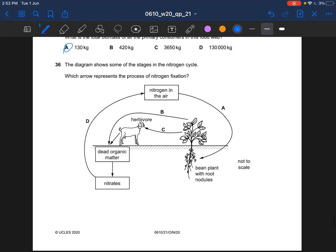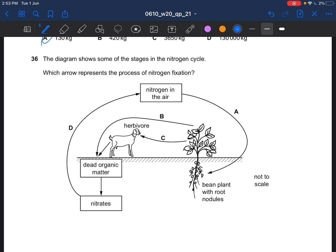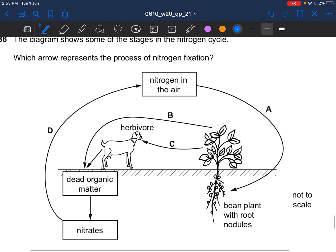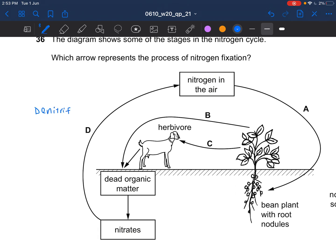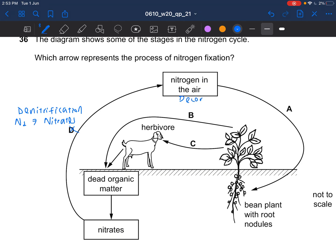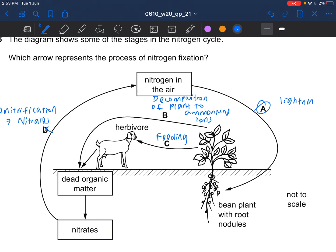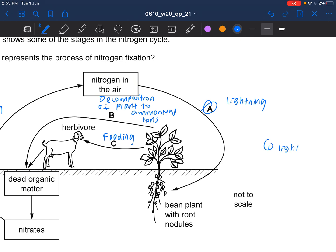Next question. The diagram shows some of the stages in the nitrogen cycle. Which arrow represents the process of nitrogen fixation? D would be denitrification. Nitrogen is converted to nitrates. B is the decomposition of plant to ammonium ions. E is feeding. A is nitrogen fixation. Nitrogen fixation, this is by lightning or bacteria.